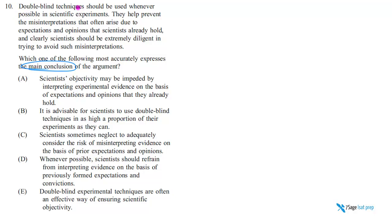So let's read. Double-blind techniques should be used whenever possible in scientific experiments. See, that already sounds like you're trying to tell me what I should do and should not do. I don't like to be told what I should and should not do. Why? Why should I believe you? So let's play this game.